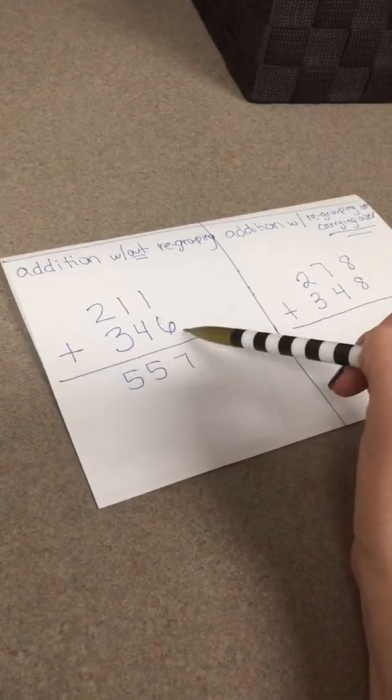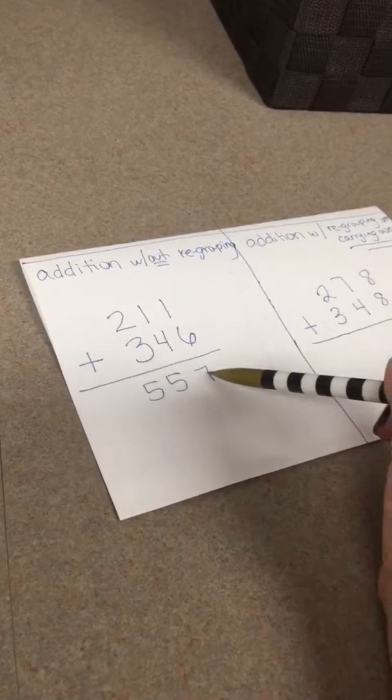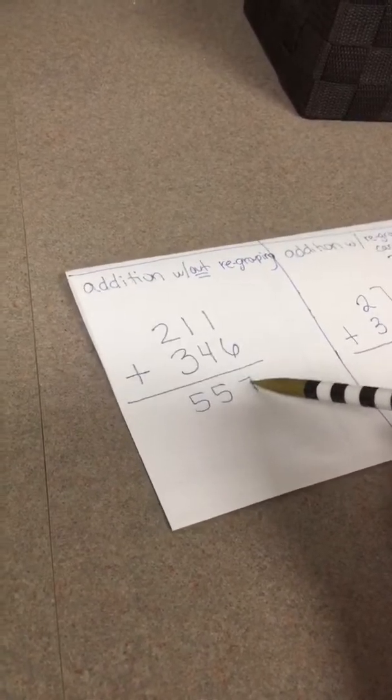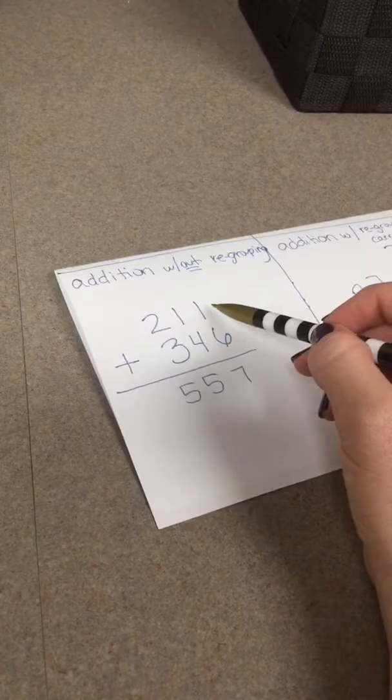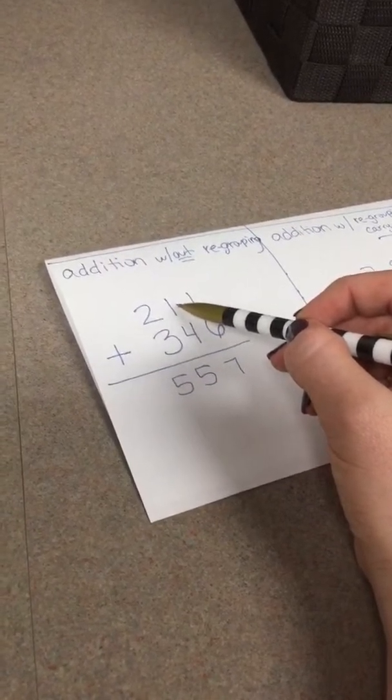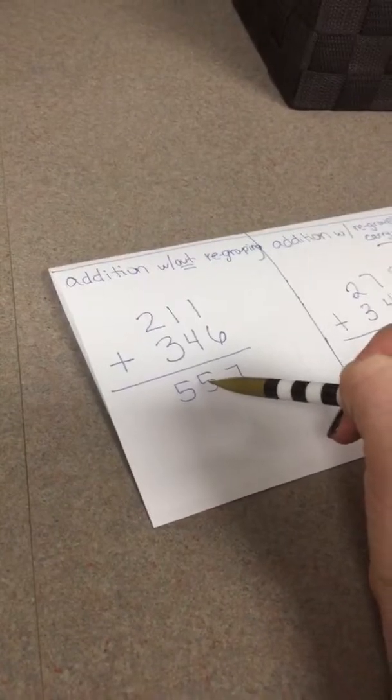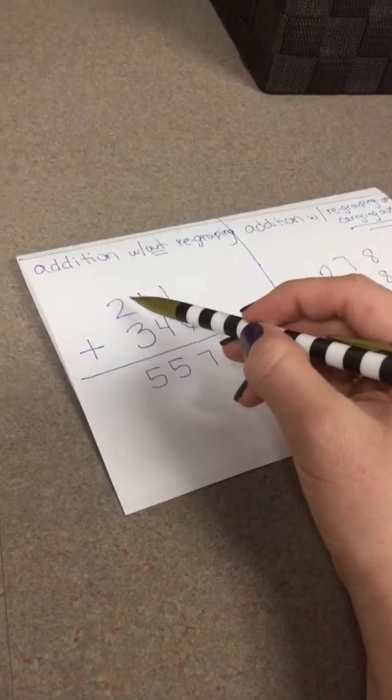So when we start in the ones place with adding, we'll notice that there's a one and a six, and one plus six is seven. Seven is not bigger than nine, so nine or less let it rest, meaning nothing has to be carried over. And then again we move over naturally to the tens and we have one and four. One and four make five.